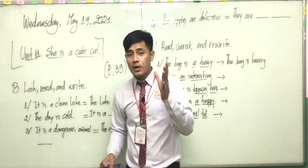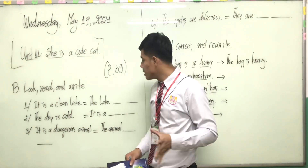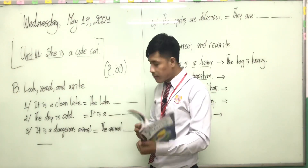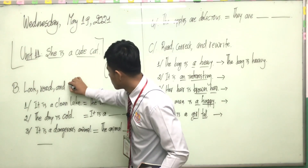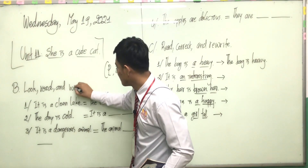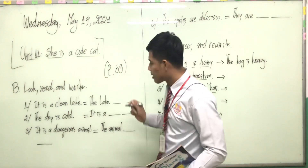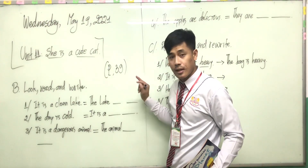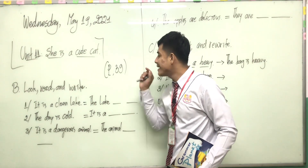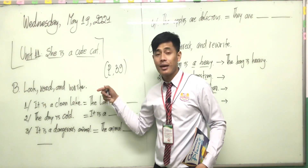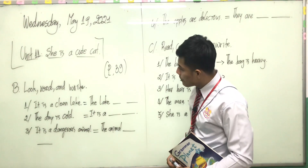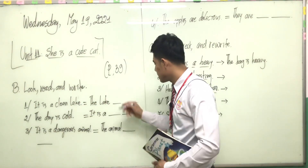Thank you so much everyone. Hope you guys have done with your answer. Let's check the answers all together. Exercise B — look, read and rewrite. In this exercise, you have to look at the picture in your book, then look at the sentence and write a new sentence that means the same. The first one has been done for you: 'It is a clean lake' — 'The lake is clean.'